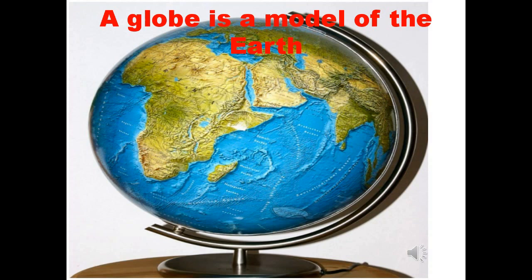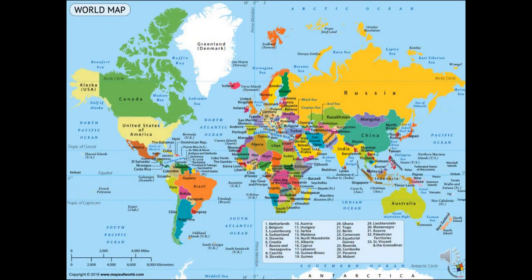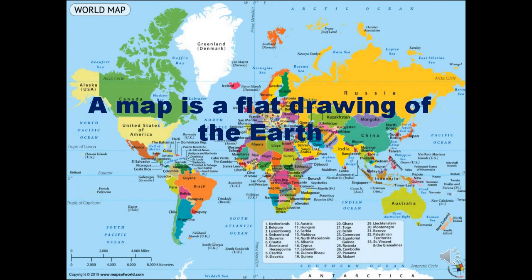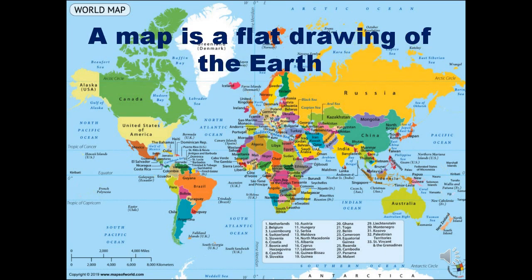It is also difficult to show every place on a globe, so we use a map. A map is a flat drawing of the earth. We can draw maps of the entire earth or a part of it. A map is light and easy to handle. We can carry it with us. A book of maps is called an atlas. A map can be big or small.